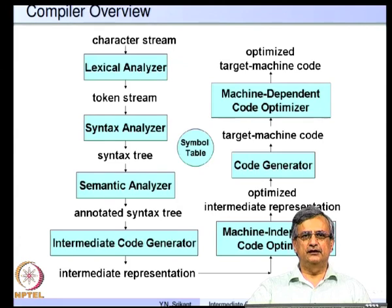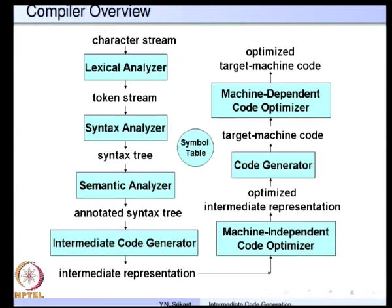To begin with, and to put the intermediate code generation phase in the right perspective, let us consider the compiler overview diagram. Once the character stream goes through lexical analysis, syntax analysis, and semantic analysis stage, we get the annotated syntax tree over which intermediate code generation can be performed. The output of this will be sent to the machine code optimizer.